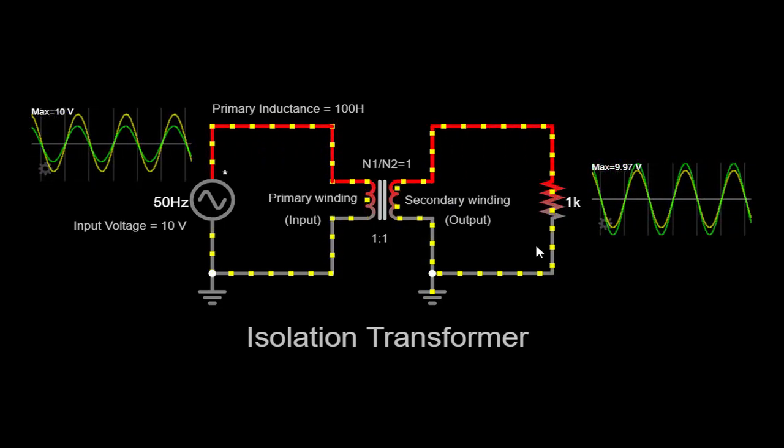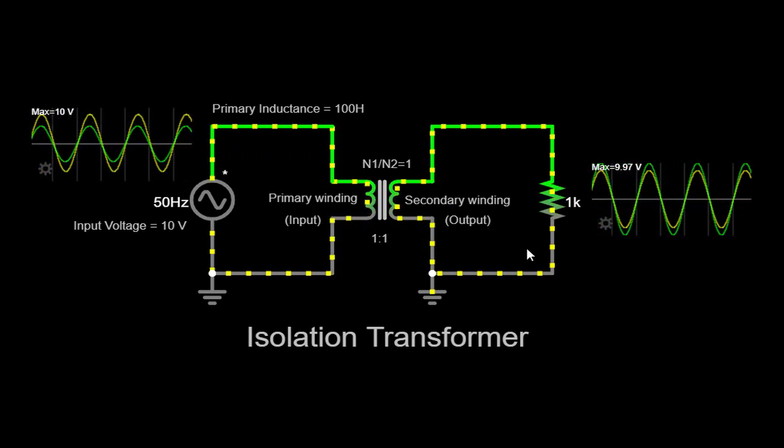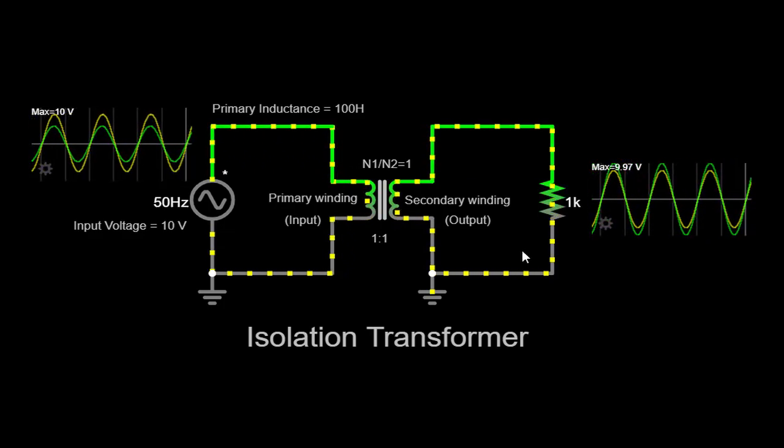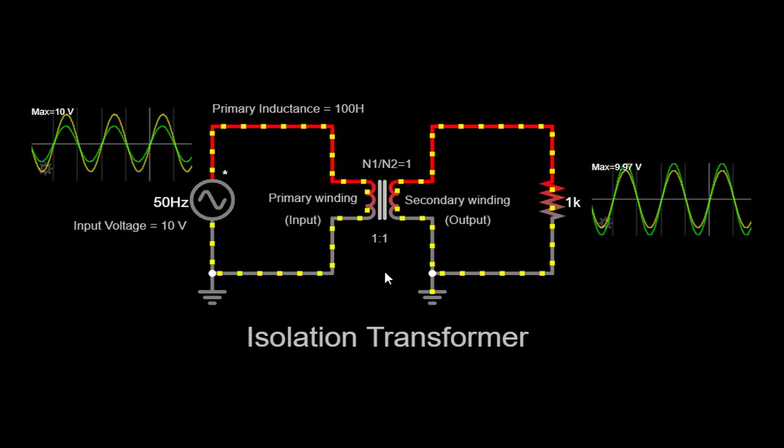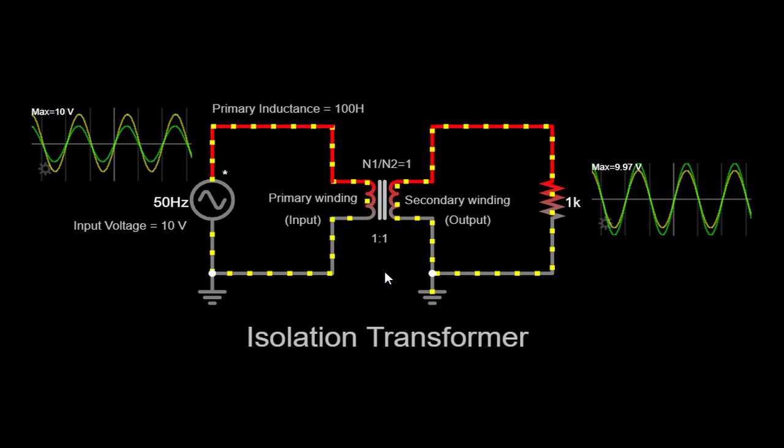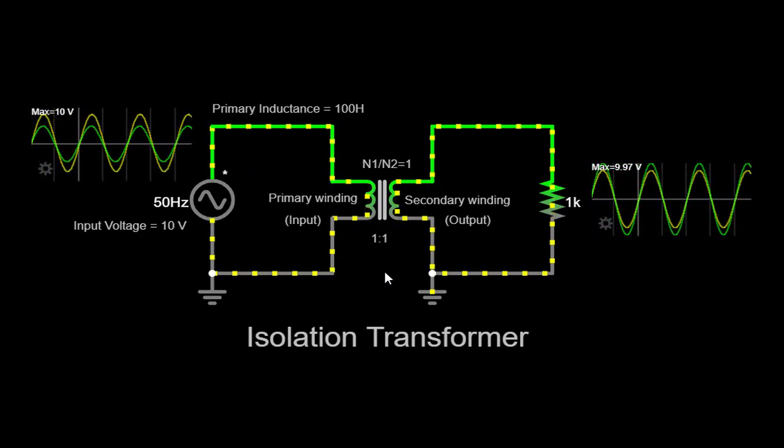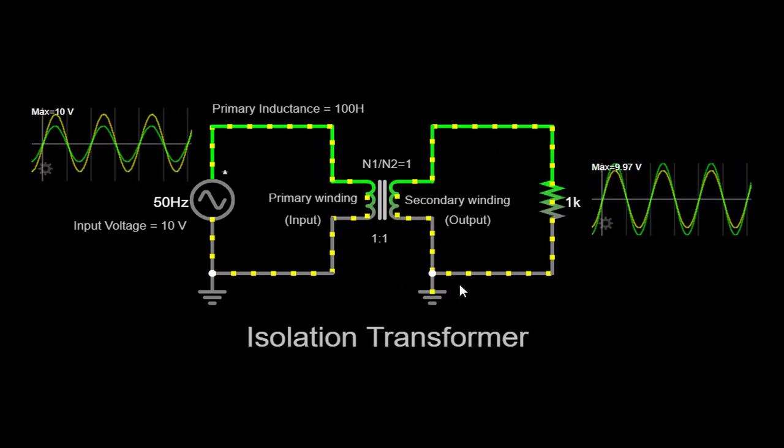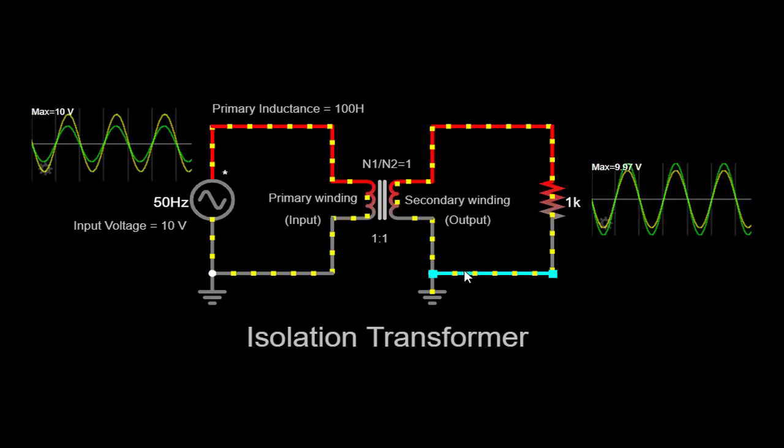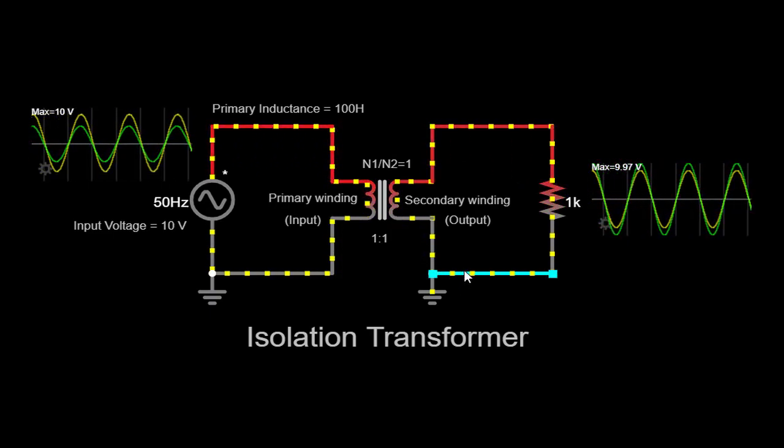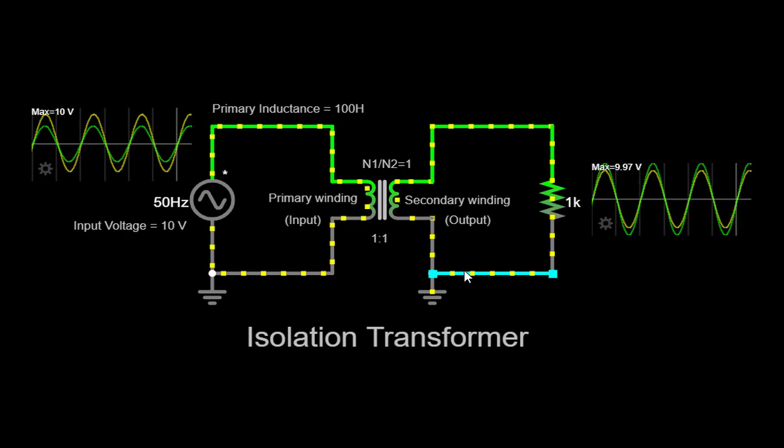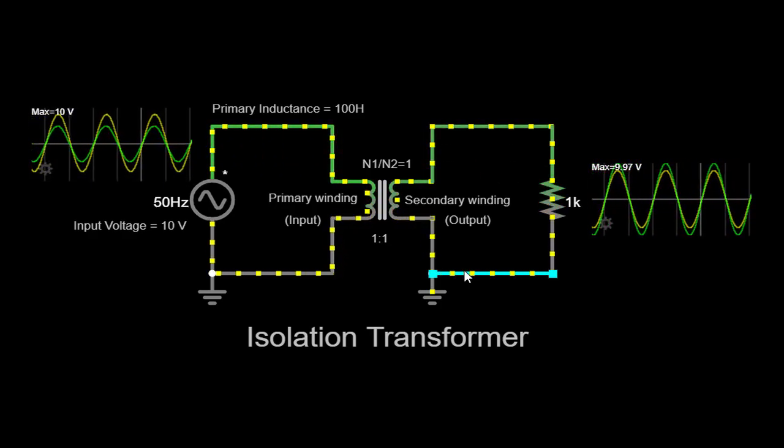For coupling coefficient, the coupling coefficient of 0.999 indicates a high degree of magnetic coupling between the primary and secondary windings. This means that most of the magnetic field generated by the primary winding is effectively transferred to the secondary winding, resulting in efficient energy transfer between the windings.